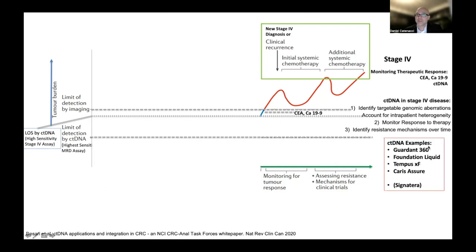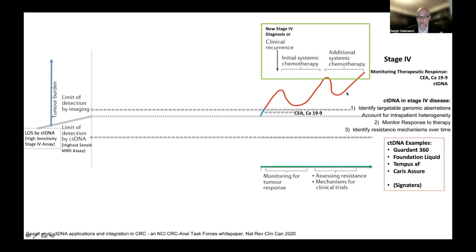The intention and utility of a circulating tumor DNA test in the stage four setting is to identify targetable genomic alterations at baseline, to account for intrapatient heterogeneity, to monitor response to therapy over time, and to identify resistance mechanisms at each time point. The opportune time points to draw blood — if your intention is to look for targetable genomic alterations — are at baseline diagnosis before therapy or at times of progression, when the levels of ctDNA are at their highest peaks. Monitoring can be done throughout to show peaks and valleys and to see how therapy is working, possibly identifying progression earlier than waiting to see it on scans or by symptoms. Examples of commercial companies include Guardant 360, Foundation Liquid — complementary to the Foundation One tissue-based panel — and Tempus XF, complementary to their tissue-based panel.